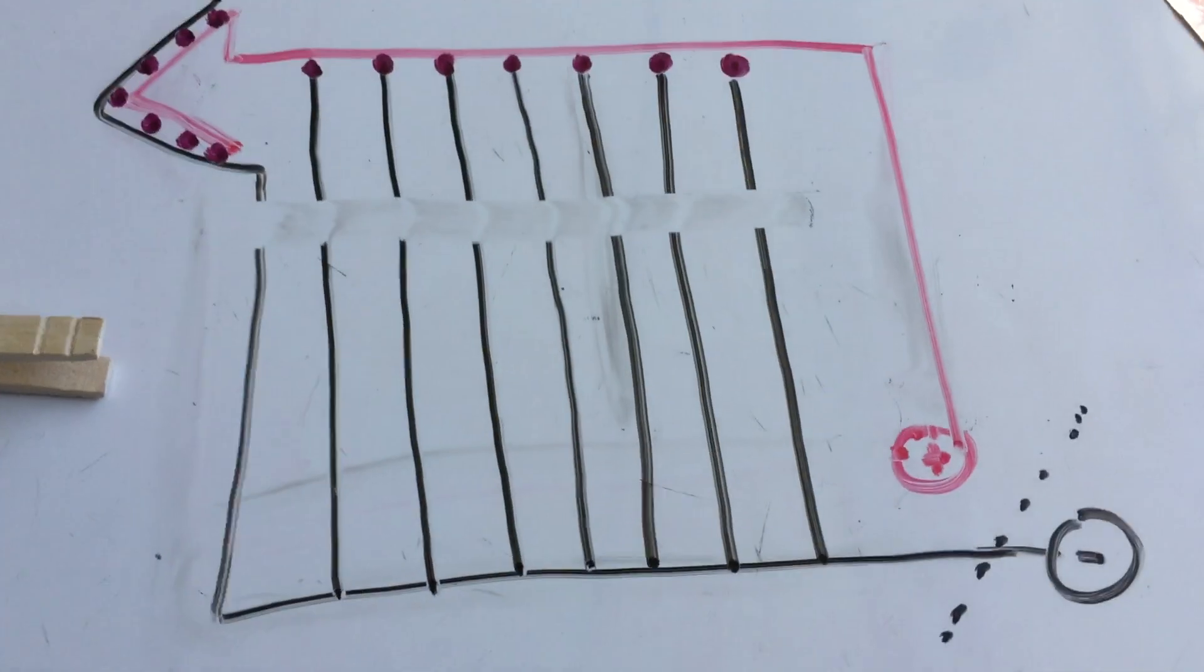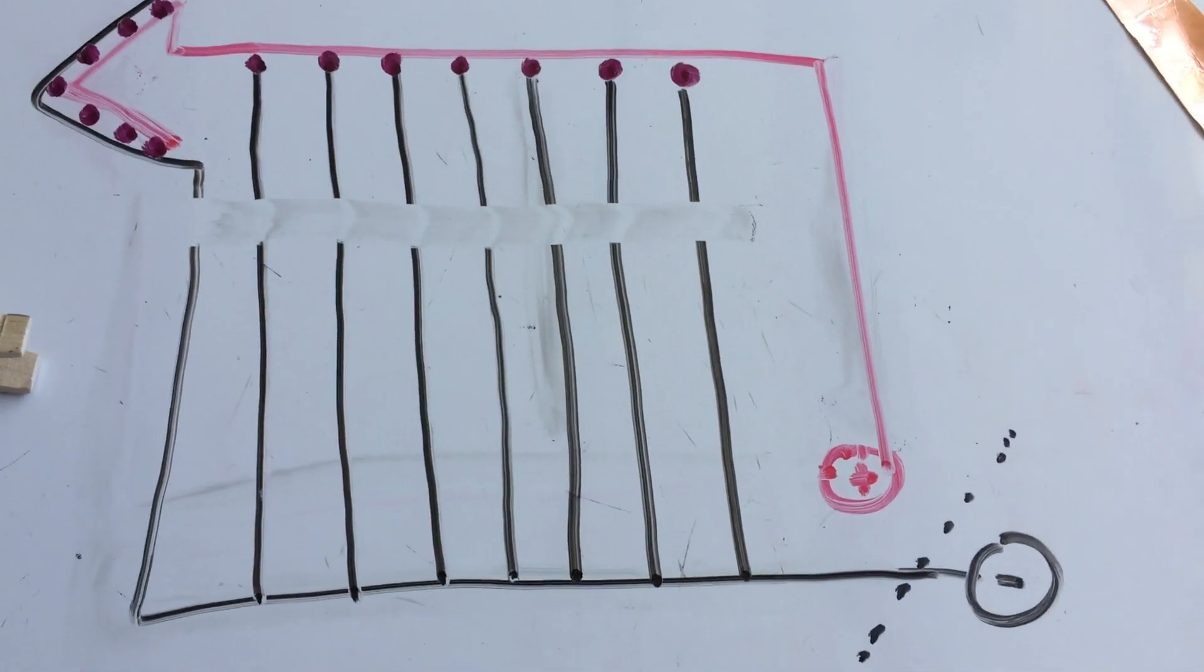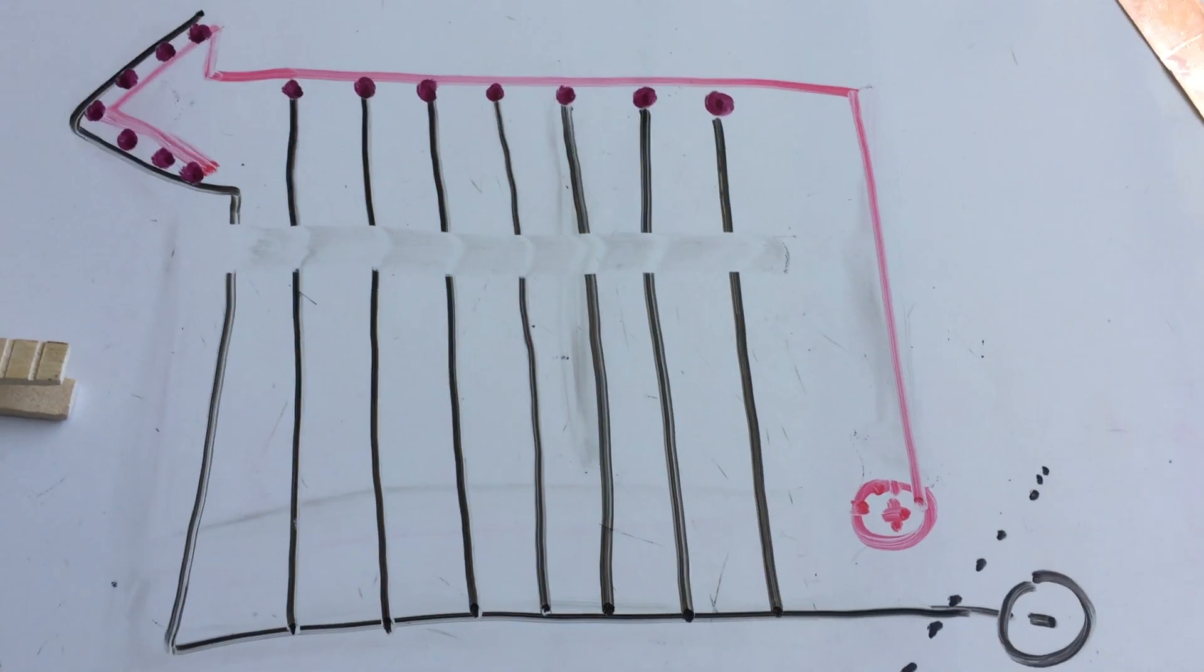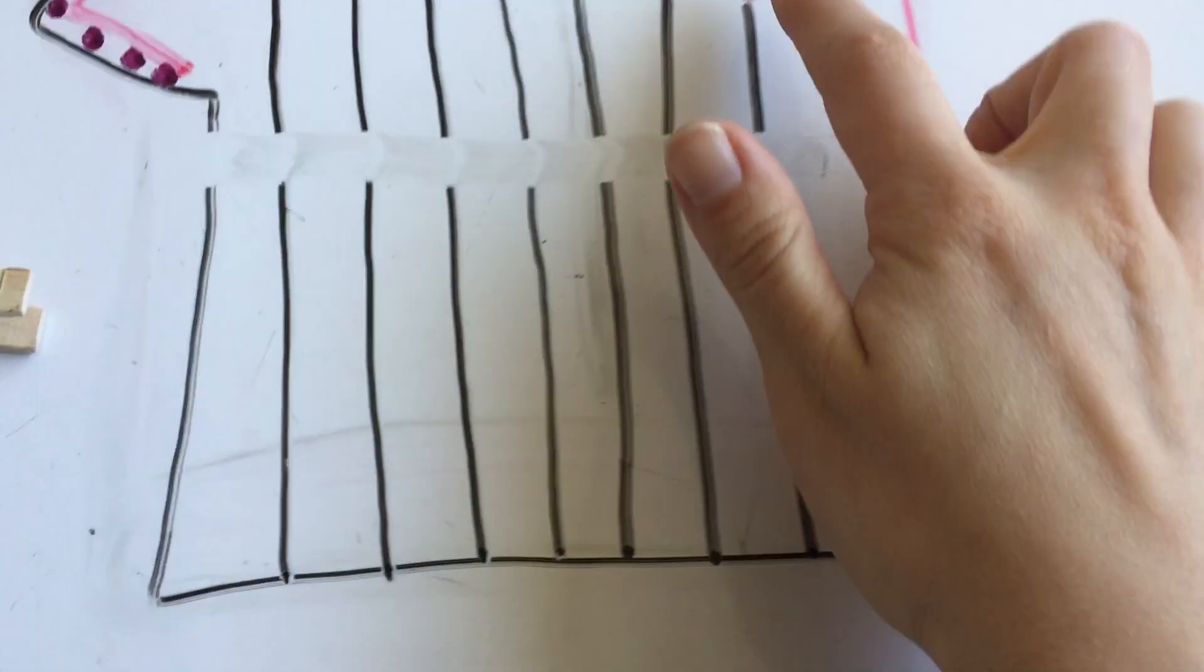Now the way this works is actually fairly simple. Here's a diagram of my circuit. You can see I have my negative line in black, my positive line in red, and these purple marks represent LEDs.